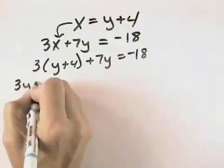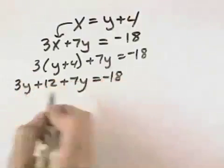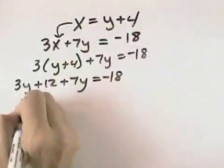We first multiply out using the distributive property. Then we can combine like terms, because 3y and 7y is 10y.